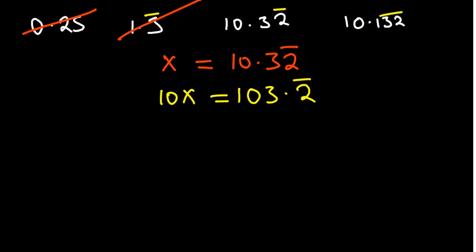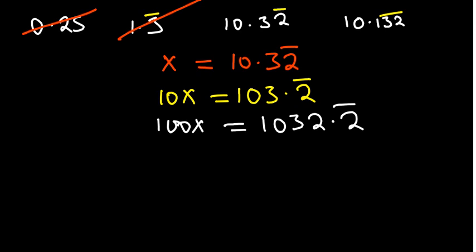Notice that if you try to subtract the right-hand sides of the two equations, they don't match up — so you can't subtract yet. We take another step and move the recurring digit to the left by multiplying by 10 again. Since we only have a single recurring digit, multiplying both sides by 10 gives 100x on the left. On the right, the 2 moves left but recurring 2s still continue after the decimal.